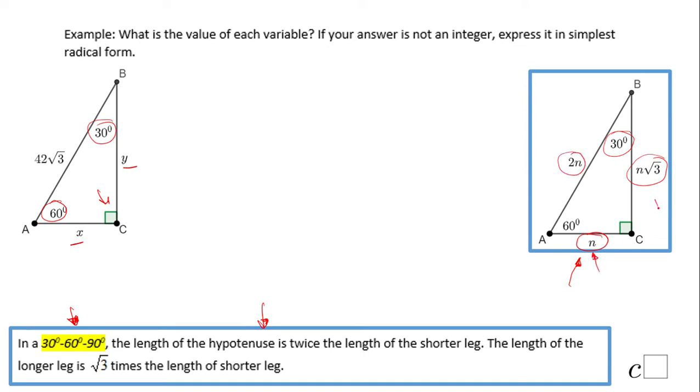So if you find this n, obviously you can find the other two sides of the triangle. So look into our problem. What we notice is that the hypotenuse is given, which is 42 square root of 3.